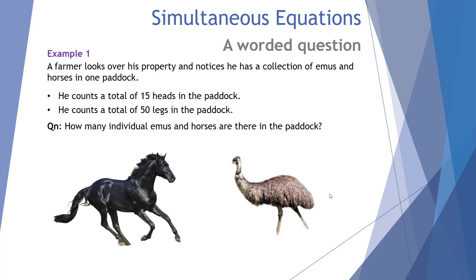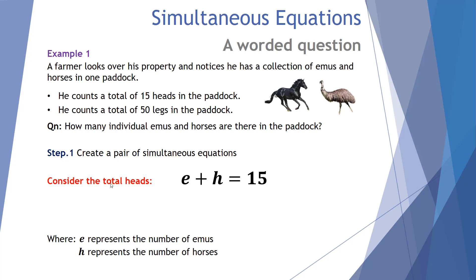My final two examples are worded ones, which are sometimes tricky for students. A farmer looks over his property and notices he has a collection of emus and horses in one paddock. He counts a total of 15 heads and a total of 50 legs. The question is: how many individual emus and horses are there? Step one — create a pair of simultaneous equations. The total heads: E plus H equals 15. For the total legs: emus have 2 legs and horses have 4 legs, so 2E plus 4H equals 50.